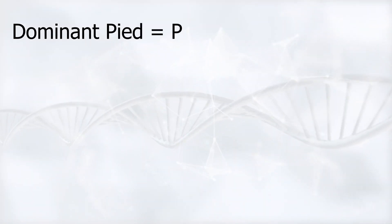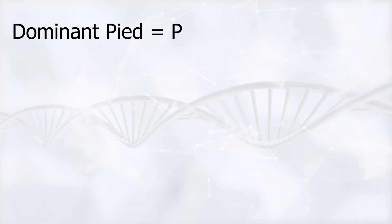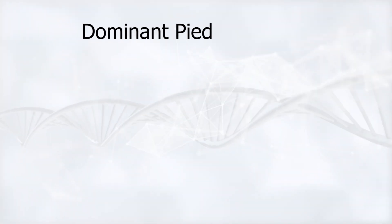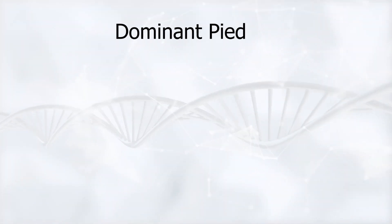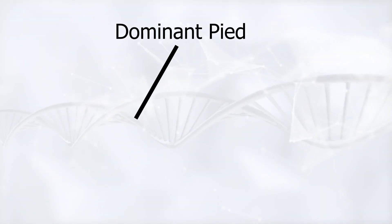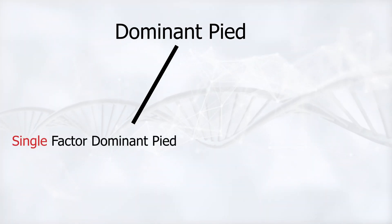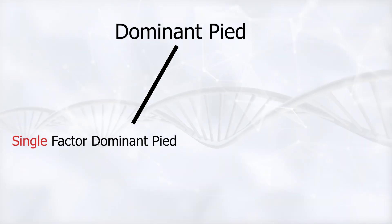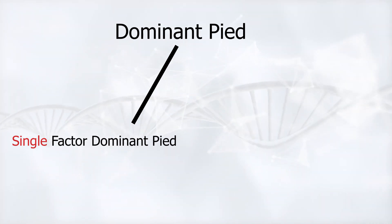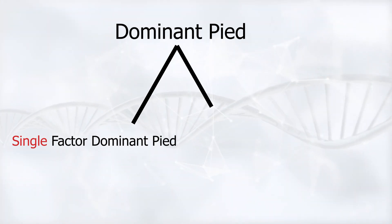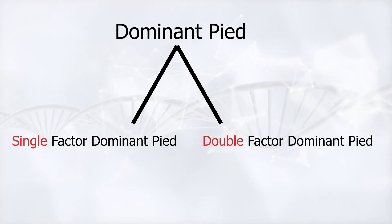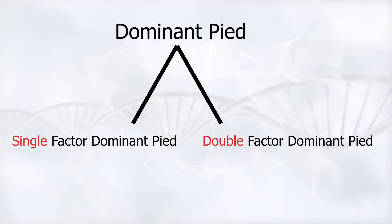The dominant Pied gene symbol is capital P — P stands for Pied. However, the dominant Pied has two forms. One form is called single factor dominant Pied, and it is when the child gets this gene only from one parent. The other form is called double factor dominant Pied, and it is when the child gets the gene from both parents.